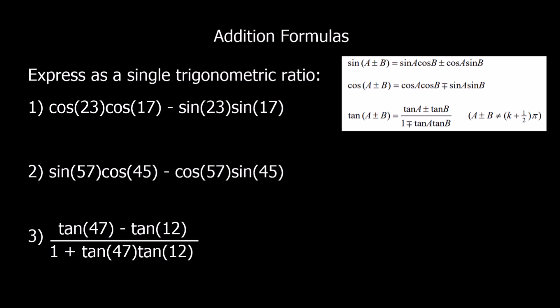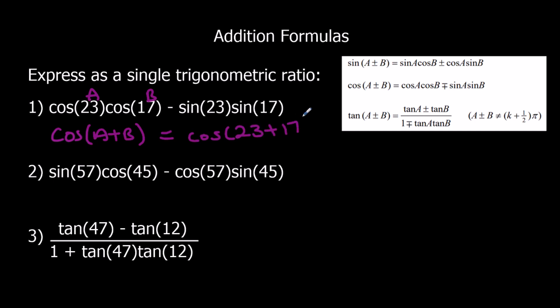Here are some for you to try — just expressing these as a single trigonometric ratio. The first one: we've got cos cos and sin sin. Cos cos, sin sin, with a minus in the middle, so that means it's cos(A + B). A is 23 and B is 17, so that's cos(23 + 17), which is cos 40.